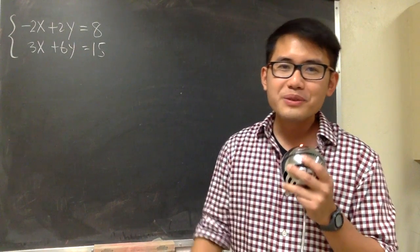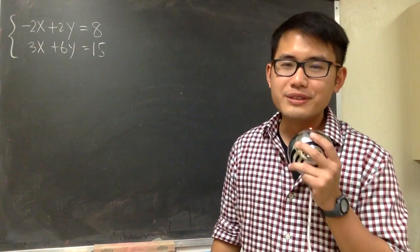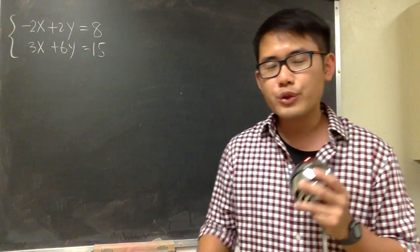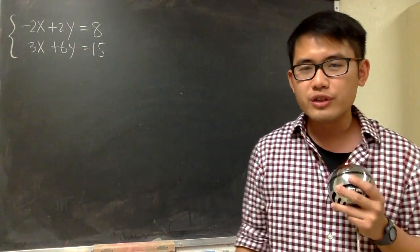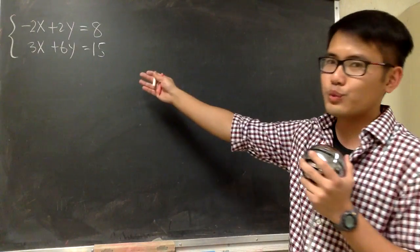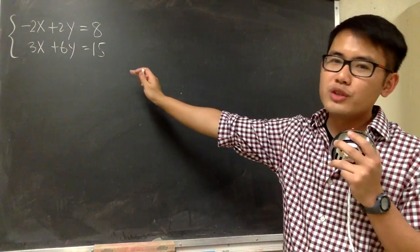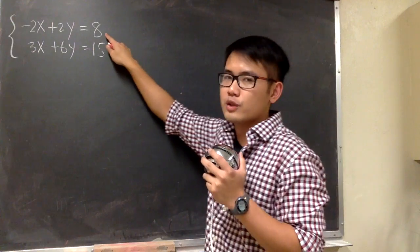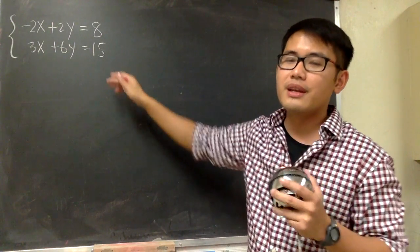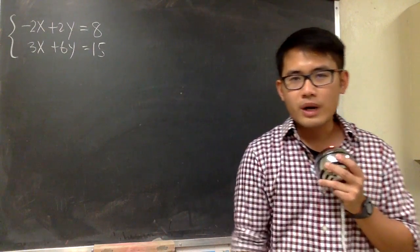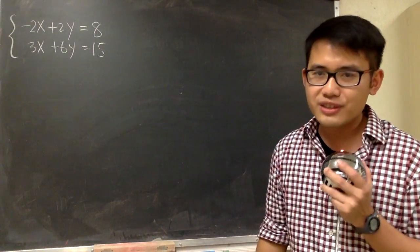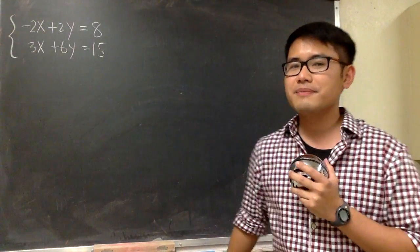In this video, I will show you how to solve a two-by-two system of equations by graphing, and I will also show you guys the three possible situations that we'll encounter. To solve a system of equations by graphing, we are going to first graph the first equation, then graph the second equation together on the same x-y plane, and we'll be looking for the point of intersection, if there is any.